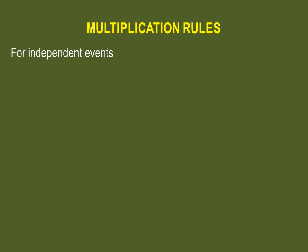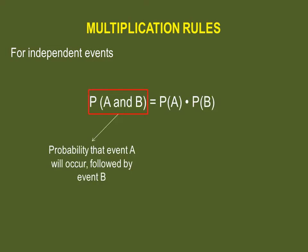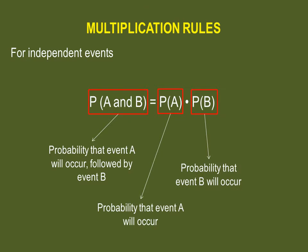The multiplication rule for independent events states that the probability that event A will occur followed by event B is equal to the probability that A will occur multiplied by the probability that B will occur as well.